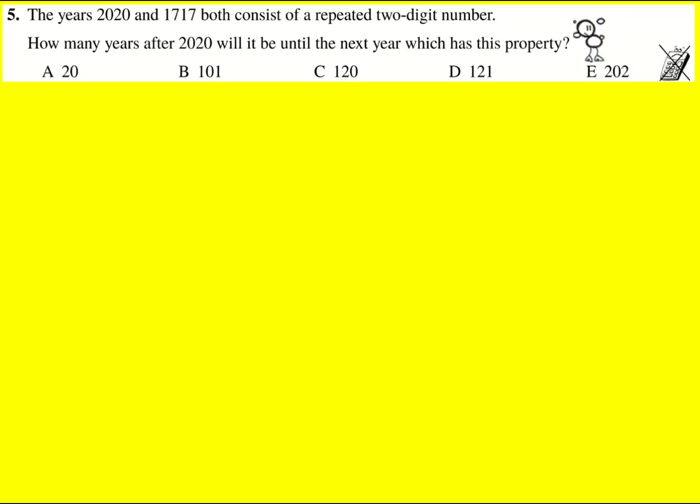We're looking for the next state with a repeated two-digit number, so it's got to be 2121, because 21 is the next number that comes after 20.